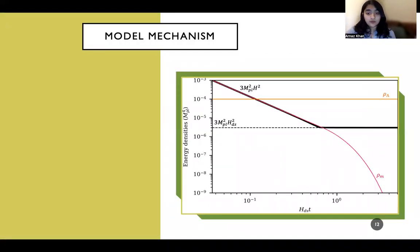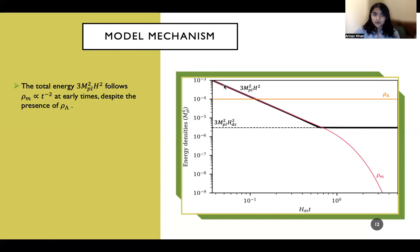Now onto the model mechanism. And here are our main results. So in this plot, you can see various energy densities with time. So the first thing I want you to look at here is the vacuum energy density. So that's here at this level. The pink line is the evolution of matter. So the matter is reducing as 1 over t squared, and it's getting diluted with expansion, as expected. But what we will observe here is the 3 Planck squared h squared term, which is basically also the total energy, if you remember from the Friedman equations, initially follows the matter energy density. And it goes down as 1 over t squared at early times. And it does this despite the presence of vacuum energy.